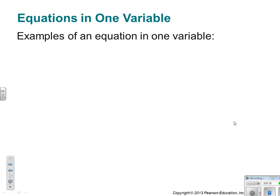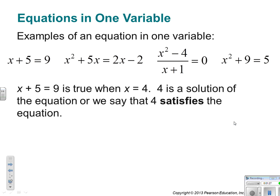Examples of an equation in one variable: x plus 5 equals 9, x squared plus 5x equals 2x minus 2, x squared minus 4 over x plus 1 equals 0, x squared plus 9 equals 5. So, x plus 5 equals 9 is true when x is equal to 4. 4 is the solution of the equation, and we say that 4 satisfies the equation. Yum, so delicious that 4.